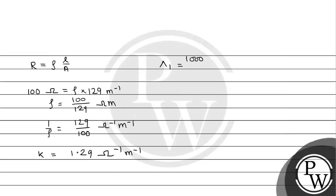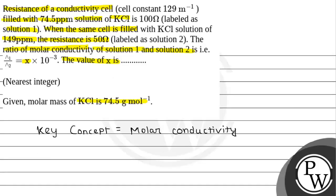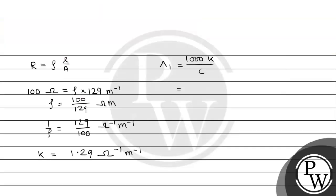So for molar conductivity lambda, the formula is 1000 kappa divided by concentration. Concentration in ppm is given, so it will be 1000 multiplied by 1.29 divided by concentration 74.5. The units will be Ω⁻¹·m⁻¹·ppm⁻¹.